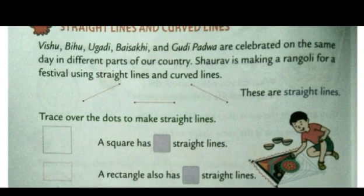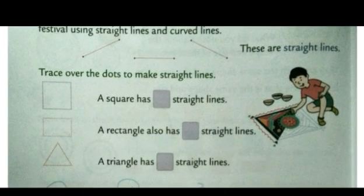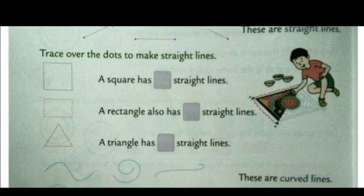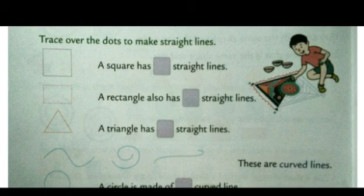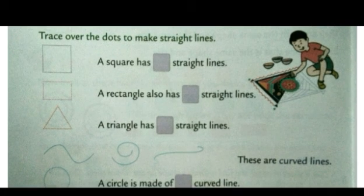Can you see these? These are all straight lines. Straight lines can be drawn horizontally, vertically, or in a slanting way. Trace over the dots to make a straight line. Some pictures of different shapes are given — you need to trace the line over these dots. Now we need to fill in the blanks.